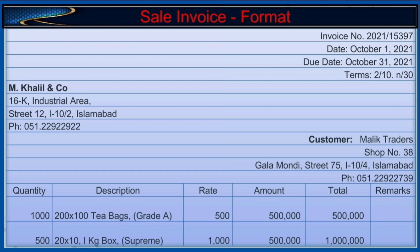Sales invoice format includes: invoice number, date of invoice, due payment date, and terms of sale — for example, 2/10 and 30. It also includes company title, name, address, contact details, and bank account number, as well as contact information of the customer. Columns usually included are quantity, description of goods, per item rate, amount, total amount, and remarks, as shown in the example.